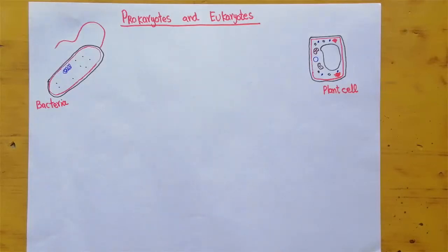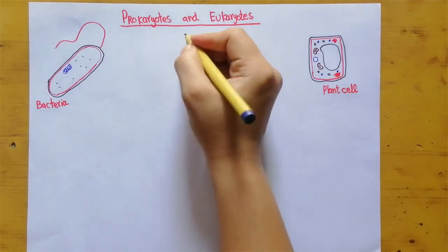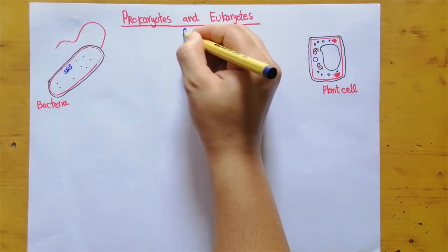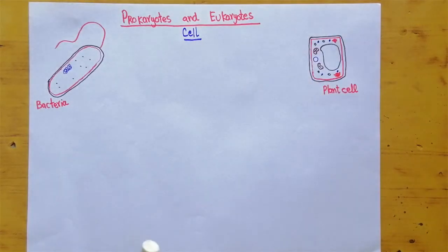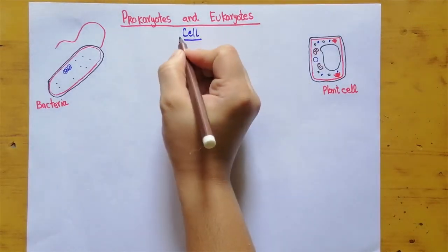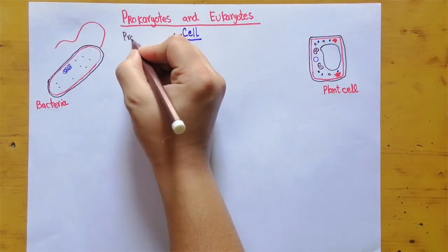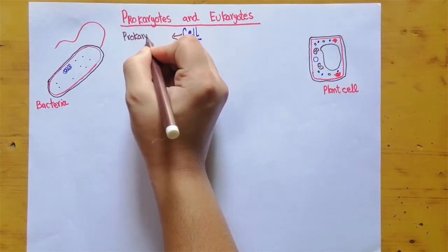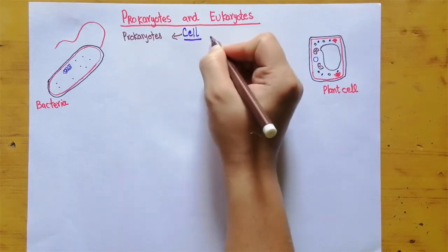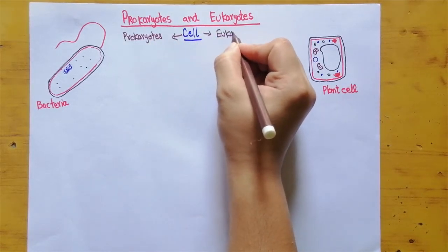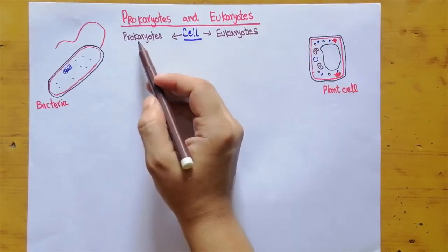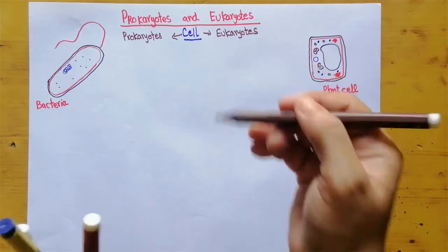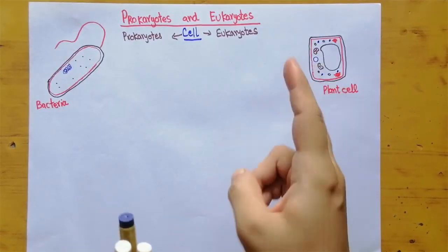All living organisms are made up of cells, and cells are the structural and functional unit of life. Cells are divided into two types: prokaryotes and eukaryotes. These words are made up of two Greek words combined to make one word.